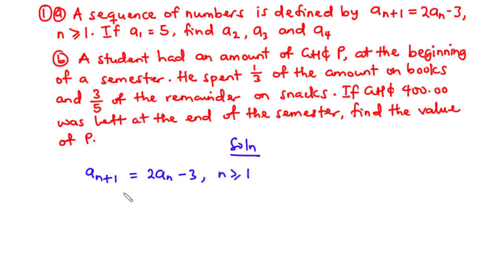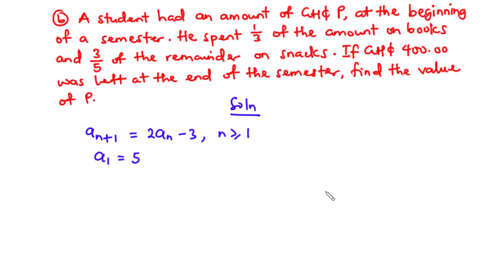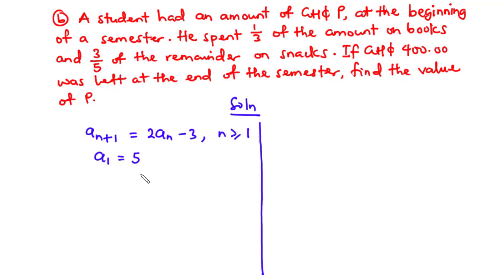We are told that a_1 is equal to 5, and we are going to find a_2, a_3, and a_4. To find a_2, we assume that n is equal to 1. The condition given is n is greater or equal to 1, so n can be 1.